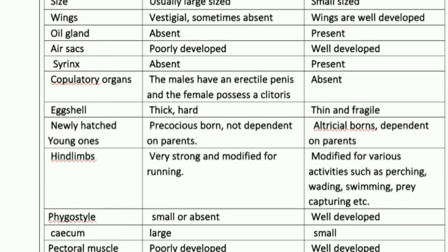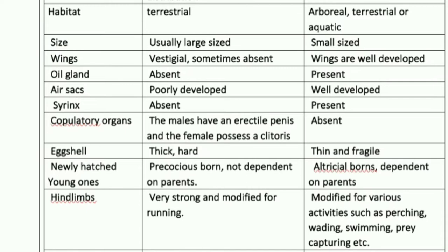For wings: since Ratitae are flightless birds, their wings are vestigial and sometimes absent. In Carinate, the wings are very well developed because these are flying birds, and wings are the important organs for flight. For oil gland: the oil gland is absent in Ratitae but present in Carinate.